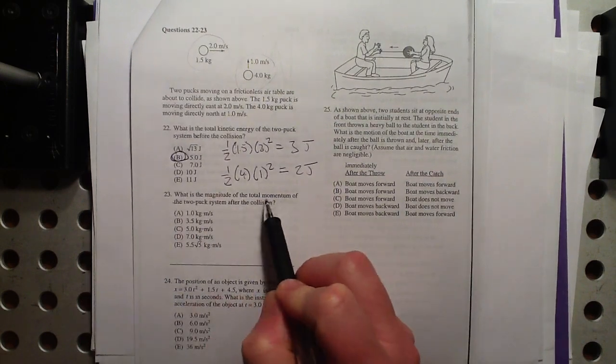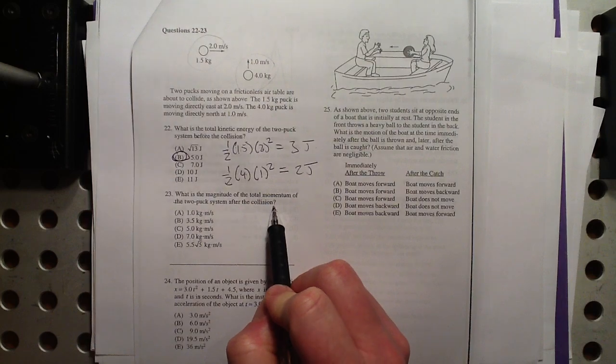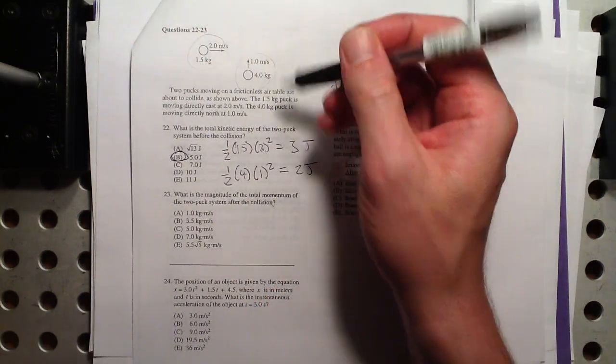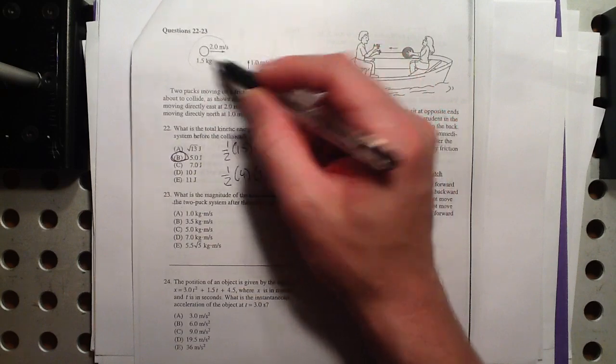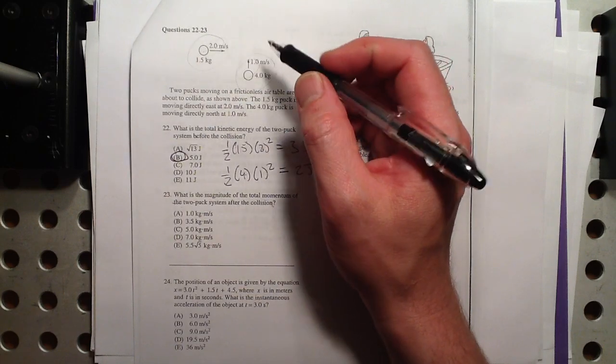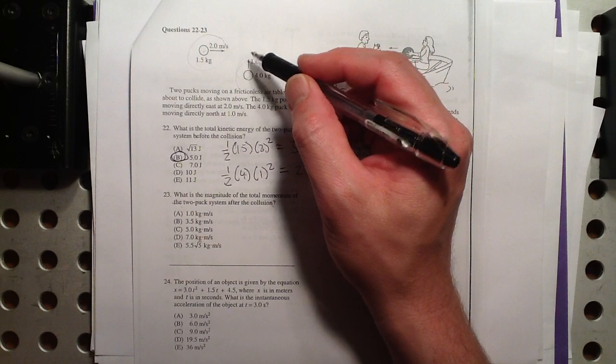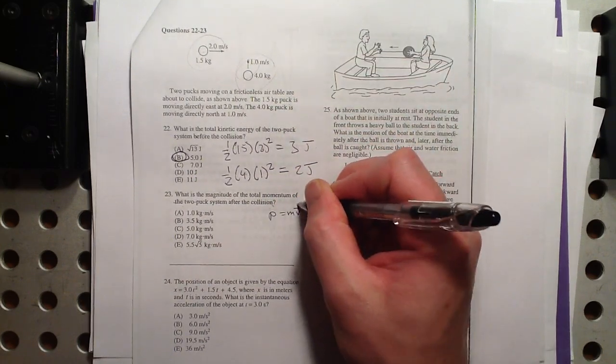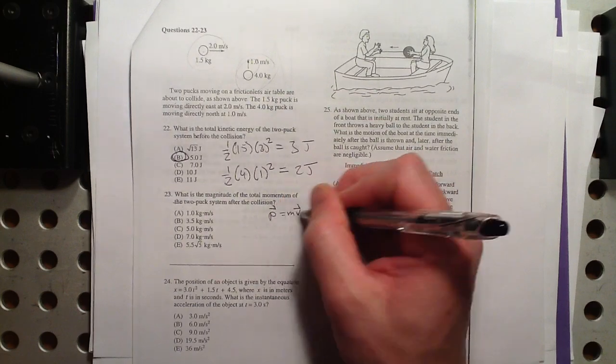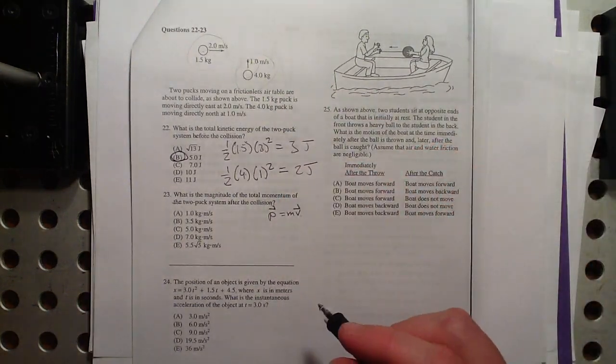What is the magnitude of the total momentum of the two-puck system after the collision? Well, momentum's conserved, so that means the total momentum here will be the same as the total momentum afterwards. And momentum does have direction, because momentum is mass times velocity. And since velocity is a vector, so must momentum be a vector.